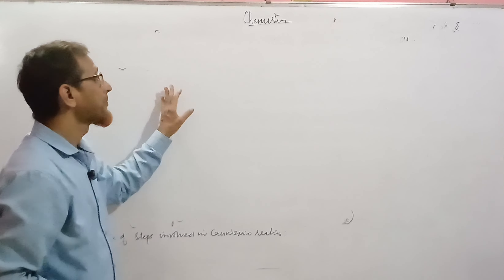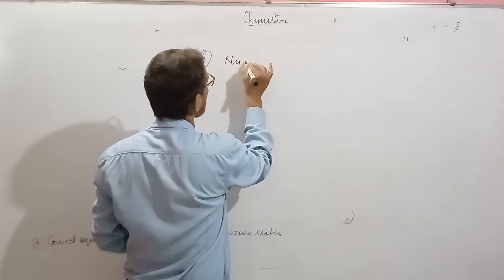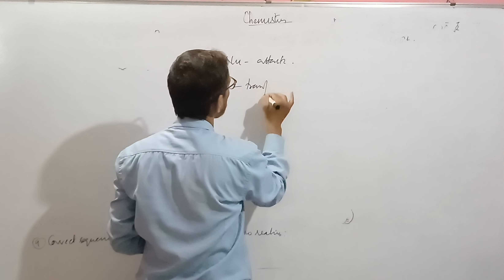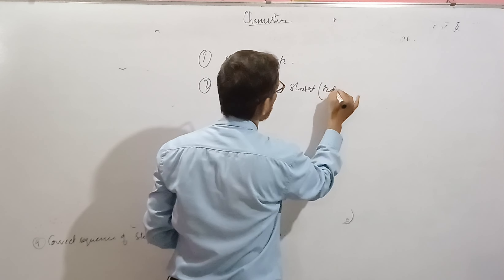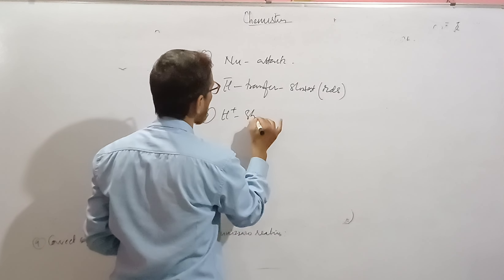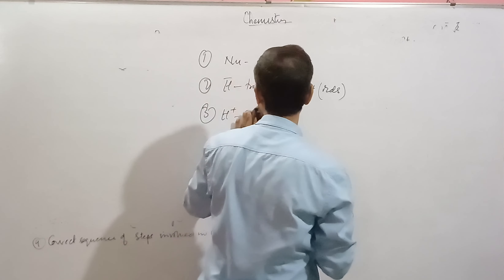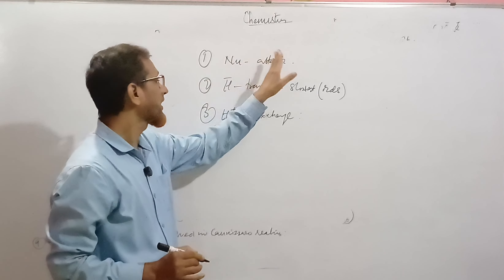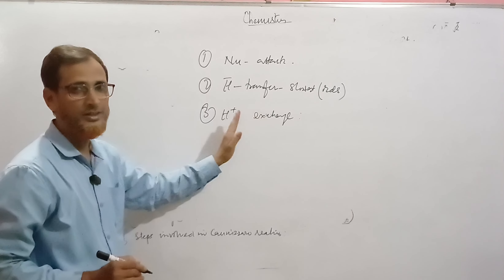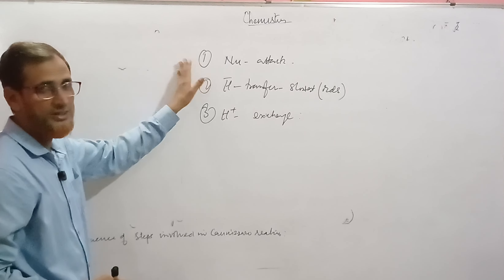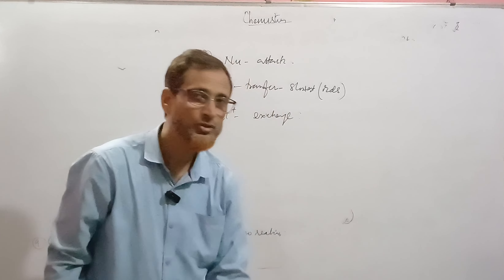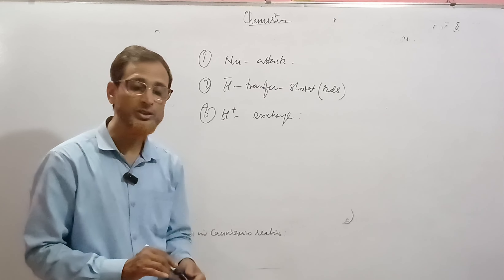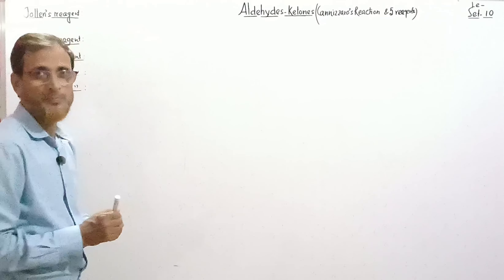Last Cannizzaro question: the correct sequence of steps involved in the Cannizzaro reaction, asked in IIT screening. Step 1 is nucleophilic attack (fast). Step 2 is hydride transfer to carbonyl carbon — this is the slowest step and the rate-determining step. Step 3 is proton exchange. The correct sequence is: nucleophilic attack → hydride transfer → proton exchange.